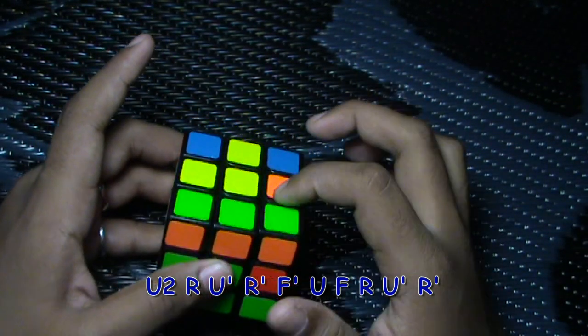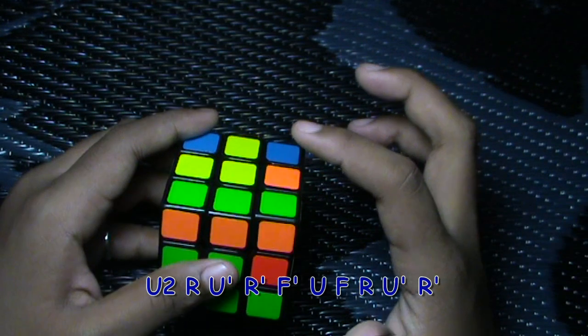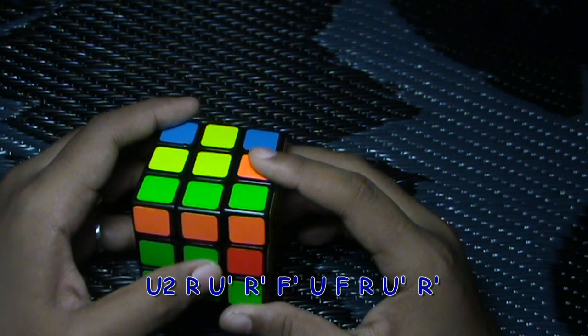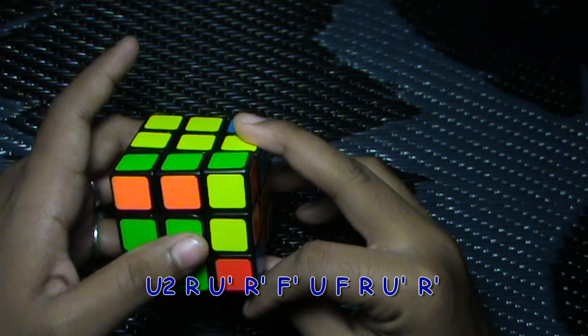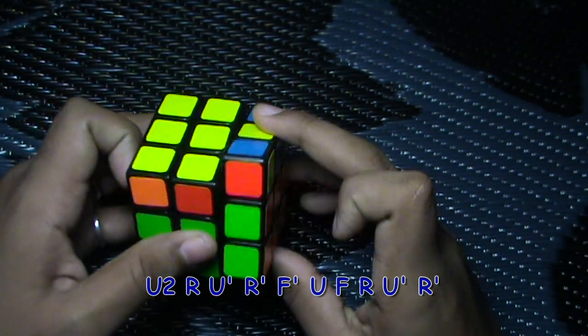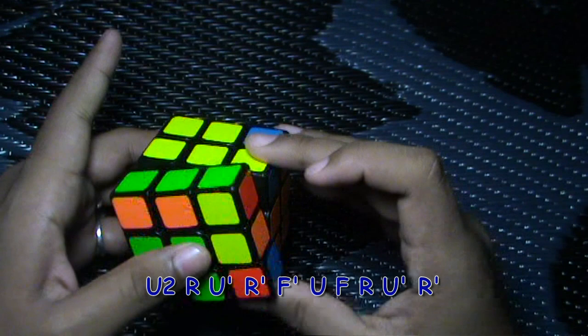Now I have this one and if I just insert the F2L pair now I will again not have all of the edges oriented. So I do another step: I do an F prime, finger push F, and then I am in a good position to insert this R U prime R prime.